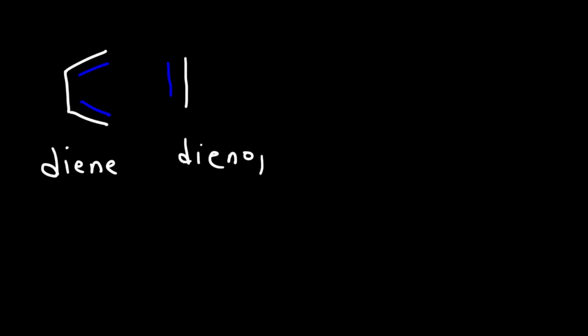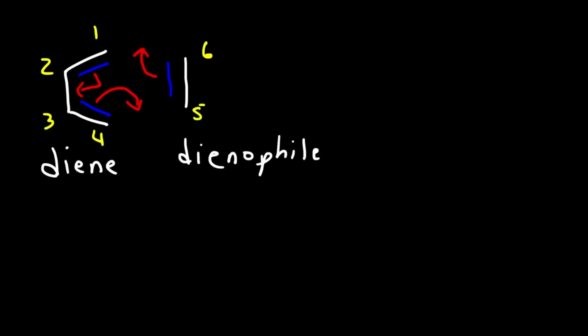In this video we're going to go over the Diels-Alder reaction. It's a four-plus-two cycloaddition reaction and also a concerted reaction mechanism — all bond breaking and bond forming processes occur in a single step. On the left we have a diene and on the right a dienophile. When you put these two together they react to create cyclohexene. The double bond moves, carbon one through six are labeled, and the red arrows show the sigma bond forming between carbons four and five, and between one and six.